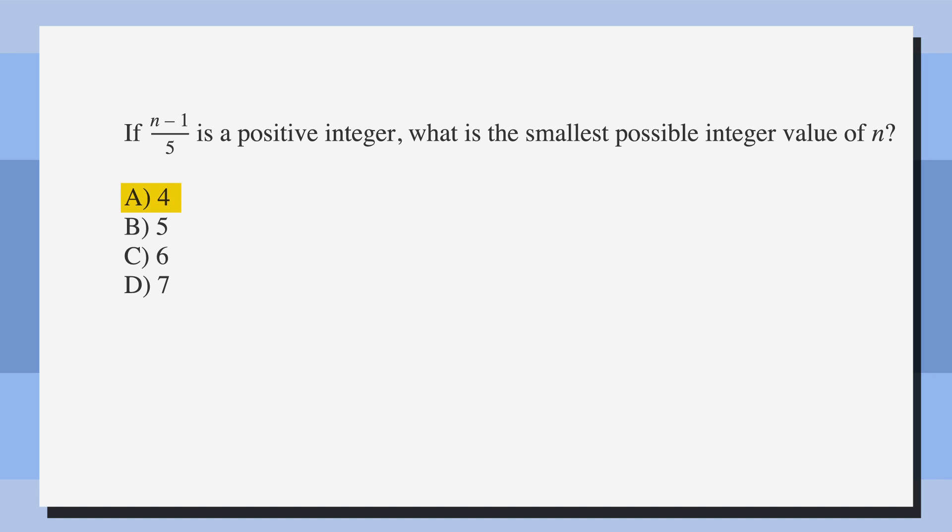The answer choices are (a) 4, (b) 5, (c) 6, and (d) 7. As always, we want to start by underlining the facts: (n-1)/5 is a positive integer, then circling the key terms: smallest, possible, integer, and n. Finally, we want to label our answer choices as the value of n.